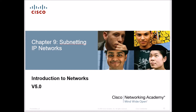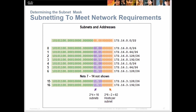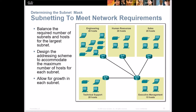We're going to finish up part two of chapter nine and primarily focus on variable length subnet mask. Let's go back and review the subnet mask quickly so we know what we're doing. Normally with the subnet mask, we are breaking up a subnet so that we can put a different amount of hosts onto a network.